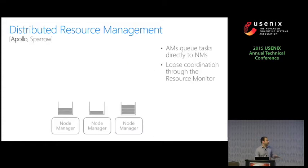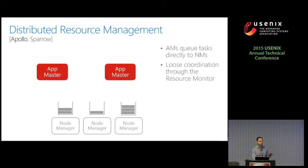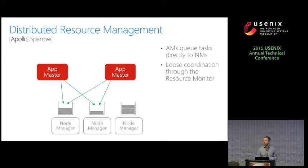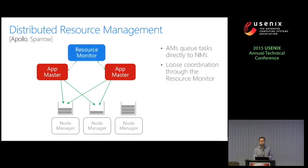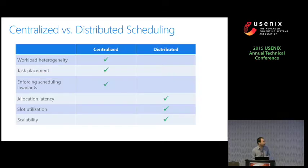At the other extreme, we have distributed resource managers such as Apollo and Sparrow. Here we have the node managers with queues in each node manager, and again one application master per job. The big difference is that there is no central coordinator; instead, each application master acts as a scheduler and submits directly tasks to the nodes — that is why we need the queues. In most systems, there is also loose coordination through a resource monitor, where every few seconds the node managers report their resources so application masters know where to queue their tasks.